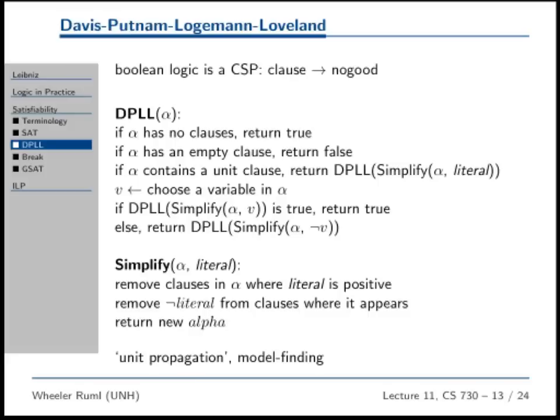If it doesn't work, then we set it to false and see what happens. This is just chronological backtracking with constraint propagation, just like we have from CSPs.